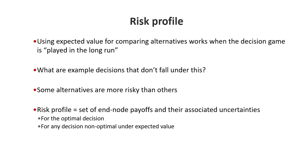So far we've used expected value for comparing alternatives. The idea of expected value is that we're playing the game in the long run — an expectation works over many repeated decisions. However, certain decisions don't fall under this category. For example, the design of a nuclear waste repository is not a long-run game — we want it to be very safe and it's a one-chance design. Expected value is somewhat meaningless there. Some alternatives are also more risky than others, so the risk profile plots the possible outcomes and their associated probabilities rather than just an average.